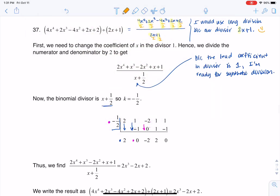All right, let me change colors again. Now I'm going to do negative 2 times negative 1 half, and that's going to get me positive 1. Add up and down, 1 plus 1 is 2.